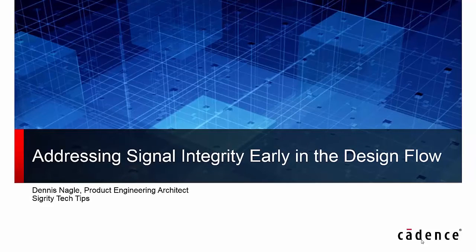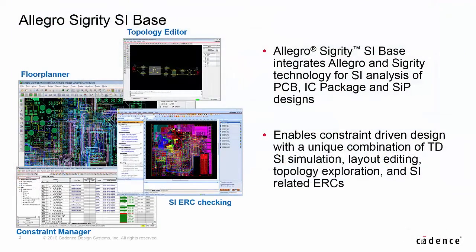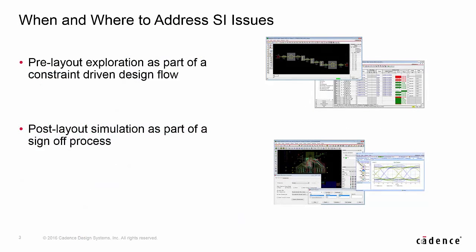Allegro Sigrity SI can be used at any stage of your design flow and in fact can be used earlier and in ways that you may not have previously considered. It is a fully capable SI environment blending Allegro and Sigrity technology. Today we'll be looking at analyzing a PCB, but it works equally as well with package designs. Allegro Sigrity SI can be an integral part of any constraint-driven design flow by enabling SI analysis at both the design and topology level, as well as providing editing and screening capabilities. We all know that a constraint-driven flow saves time and prevents issues from propagating down to SI sign-off.